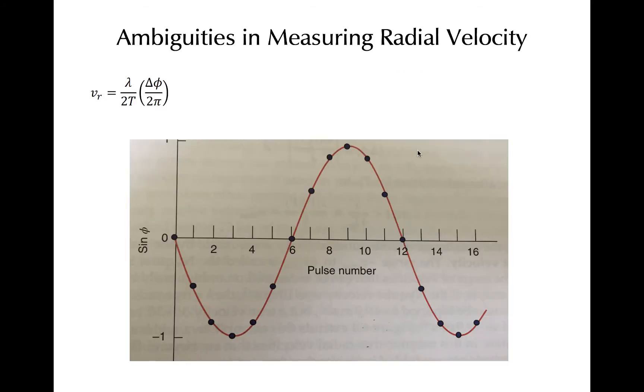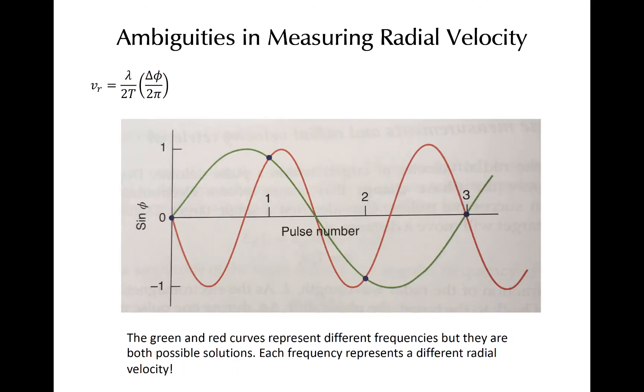One way of visualizing this problem is by plotting the phase shift over a sequence of pulses. This plot shows the sign of the phase of return signal of the radar for a series of pulses shown on the x-axis. Effectively, given a known pulse period, measuring a sequence of phase shifts allows us to recover the Doppler frequency. In this figure, the blue dots represent an individual phase shift measurement between each pair of successive pulses.